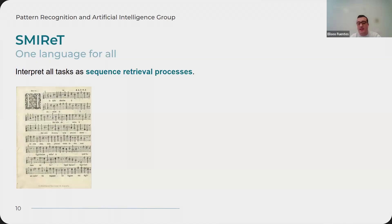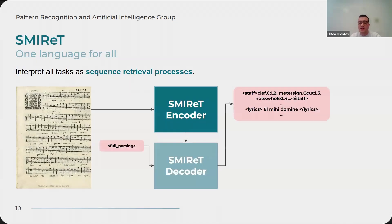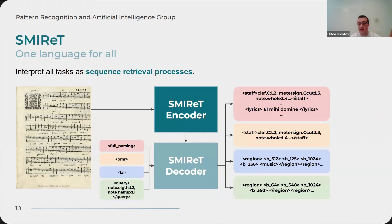We can condition the model to perform a specific task for extracting information from the music document. The encoder performs a representation, and the decoder receives a label with the task it has to perform — for example, full parsing, OMR, layout analysis, or a query. The output is expected to differ across different tasks: in one case we get the full transcription, in another we get bounding boxes, et cetera.